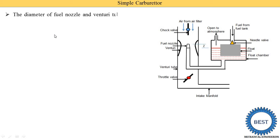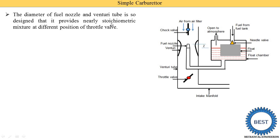The diameter of the fuel nozzle and the venturi tube is designed to provide a nearly stoichiometric mixture at different positions of the throttle valve. Different throttle positions are achieved by acceleration in our vehicles — in a bike we rotate the accelerator, in a car we push the accelerator pedal, changing the throttle valve position. When full acceleration is given, the throttle valve comes to a vertical position and the maximum quantity of charge is supplied to the engine. At different throttle positions the pressure changes in the venturi, but these conditions provide a constant or stoichiometric mixture.